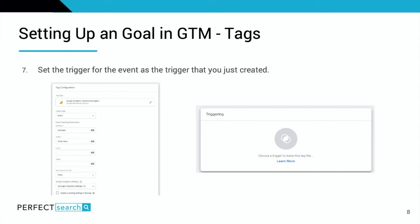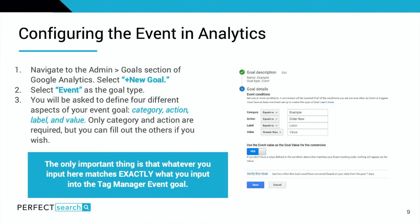Here are more specific screenshots for reference. You set the trigger for the event as the trigger you just created. In this example, the category is set to 'Example' and the action is 'Order Now.' Then you select the trigger we just created to make sure it matches, ensuring each tag has a corresponding trigger and vice versa.